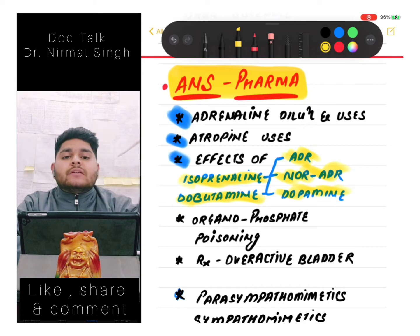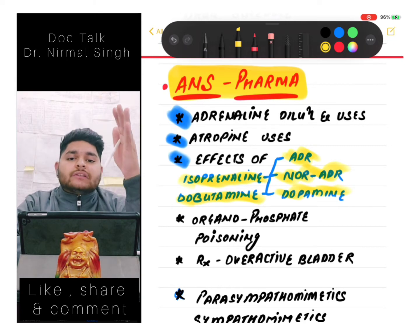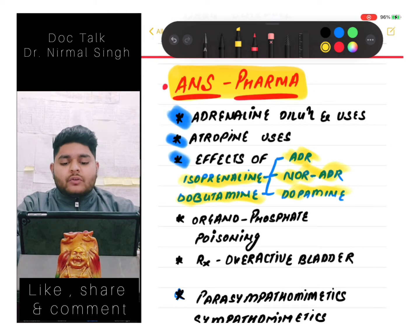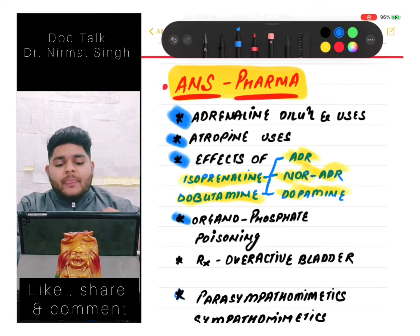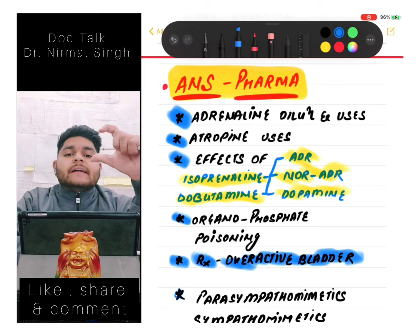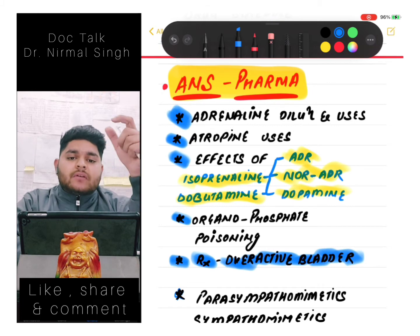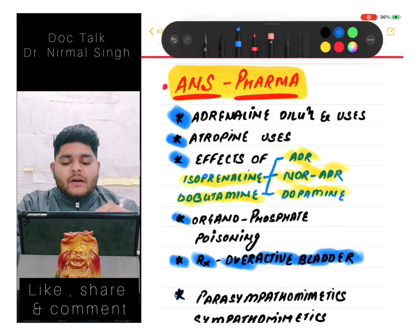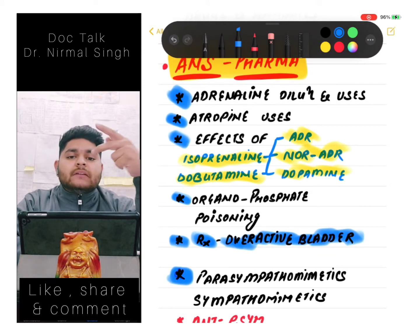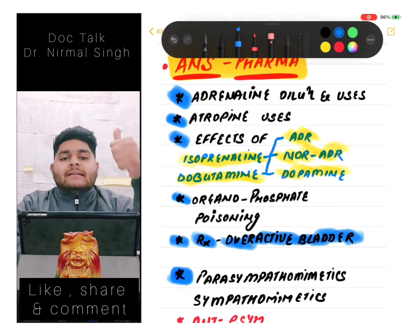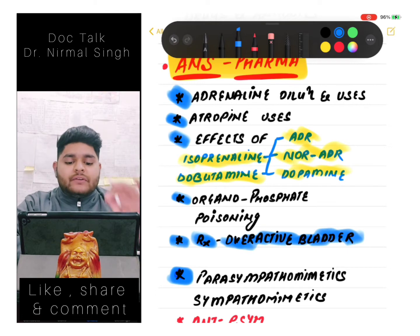Then we should know about organophosphate poisoning and its treatment. We should know about the treatment of overactive bladder - there is a class of drugs used in overactive bladder that we should know about. Then we should know about parasympathomimetics and sympathomimetics - these are two different classes, including their examples, drug classes, and adverse drug reactions.